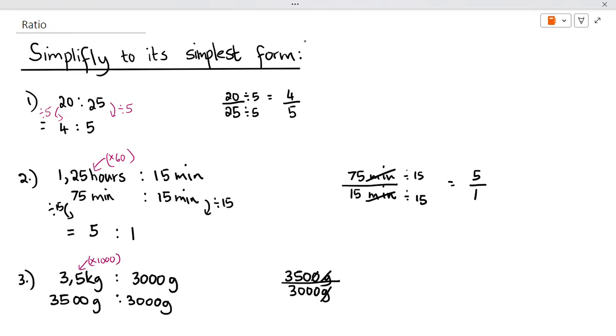I'll divide by 10, and then the highest number that can divide into 35 and 30 would be 5. So if I divide the top by 5 and I divide the bottom by 5, I'm going to get 7 over 6. So my answer is going to be 7 to 6 as a ratio.